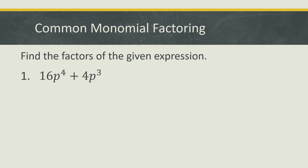Let us find the factors of the given expression. Number 1: 16p to the 4th power plus 4p cubed. To get a common monomial factor, the first step is to get the greatest common factor of the given numerical coefficients.